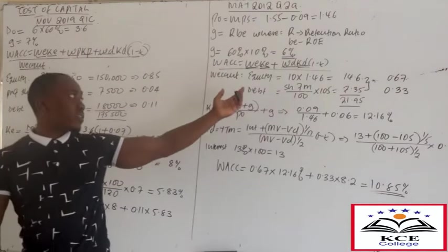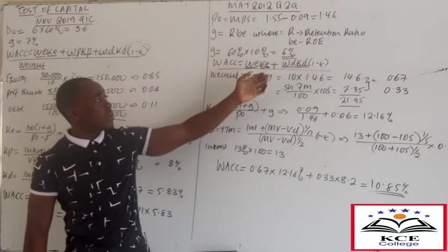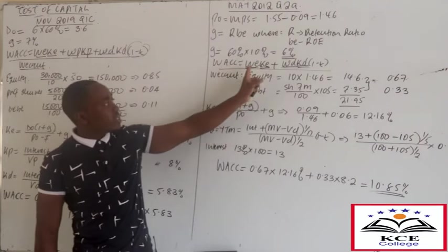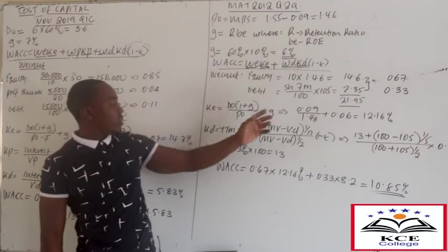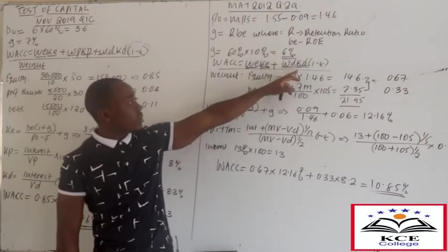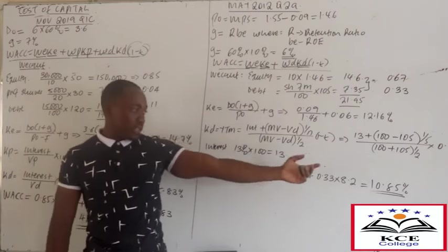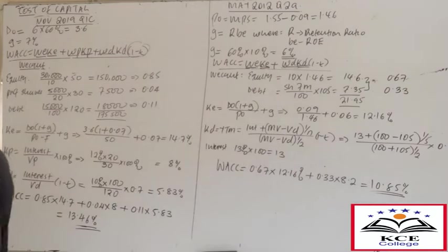That's as simple as that. First write the formula, then determine what ingredients you need: weights, cost of equity, cost of debt - and compute each one.